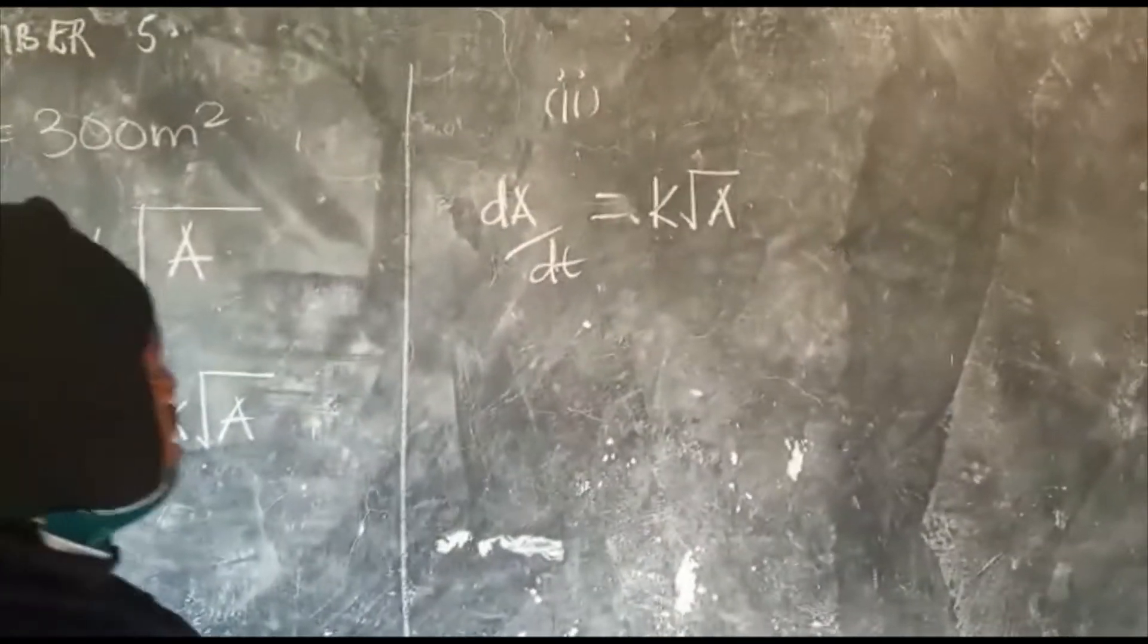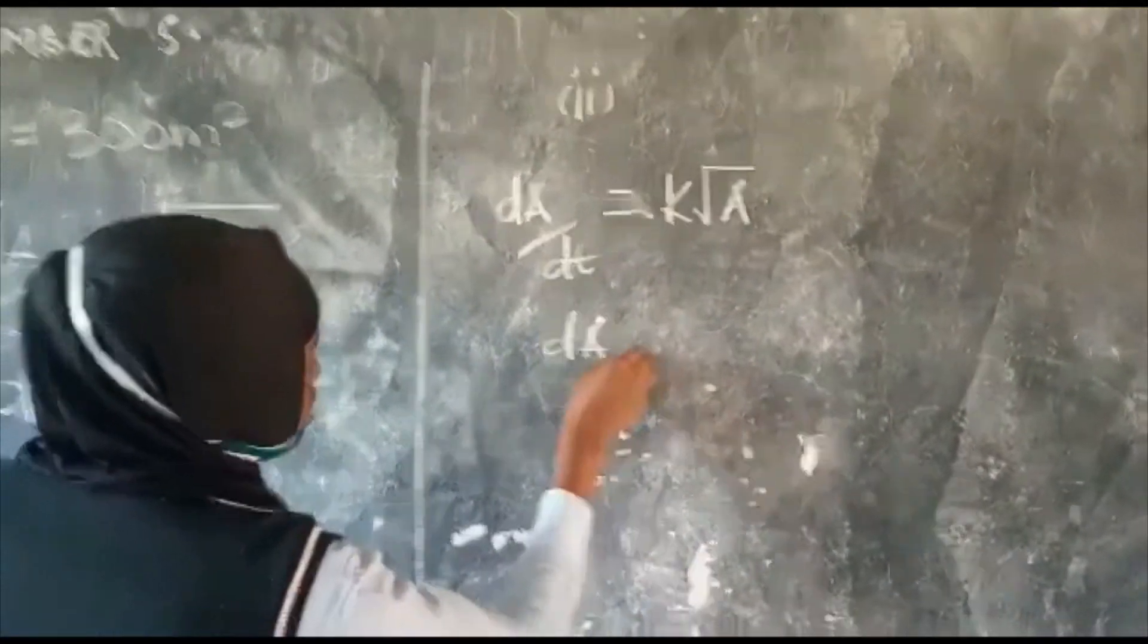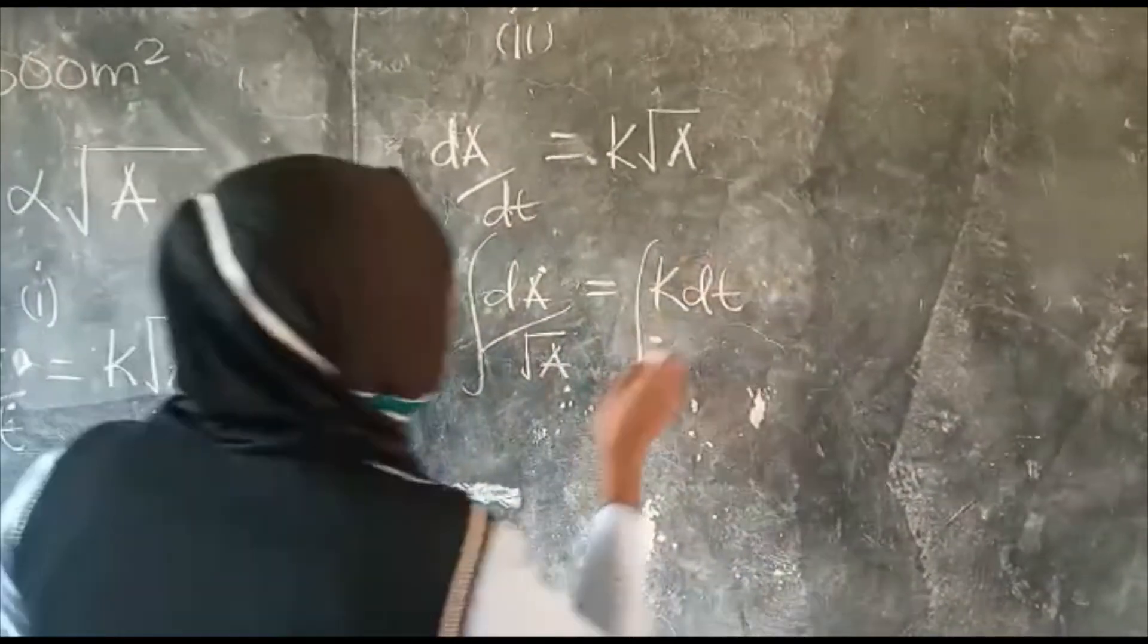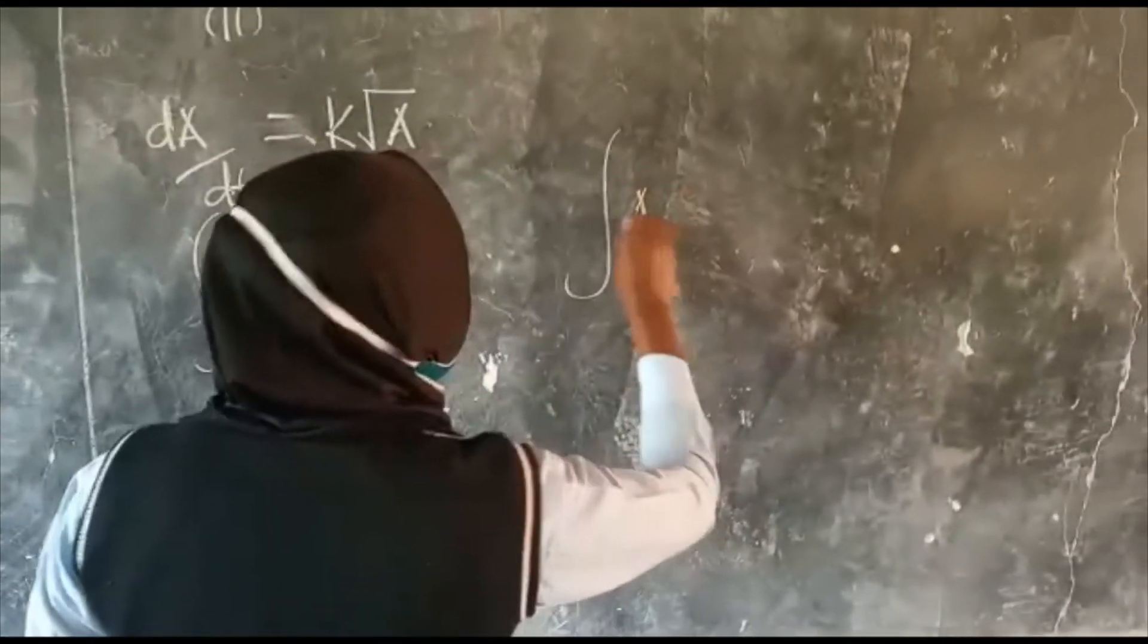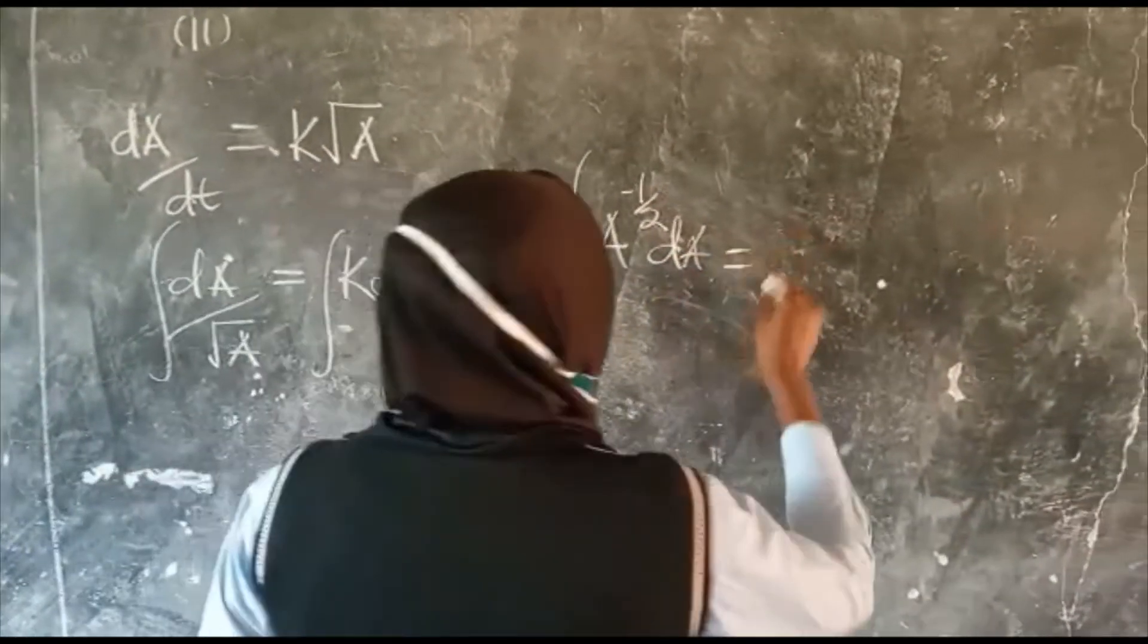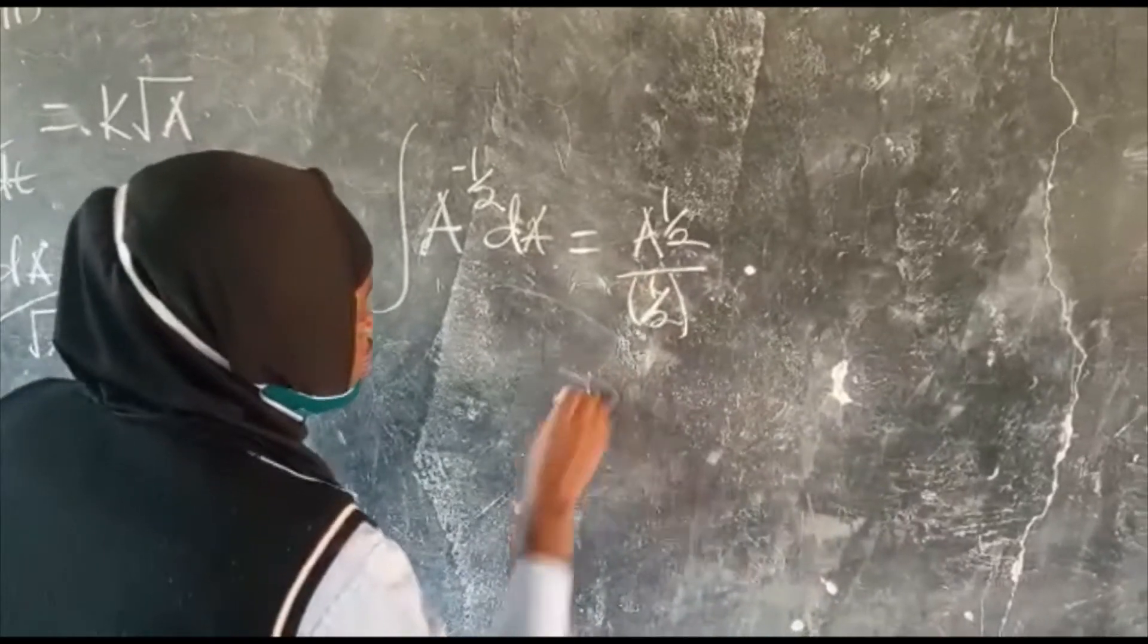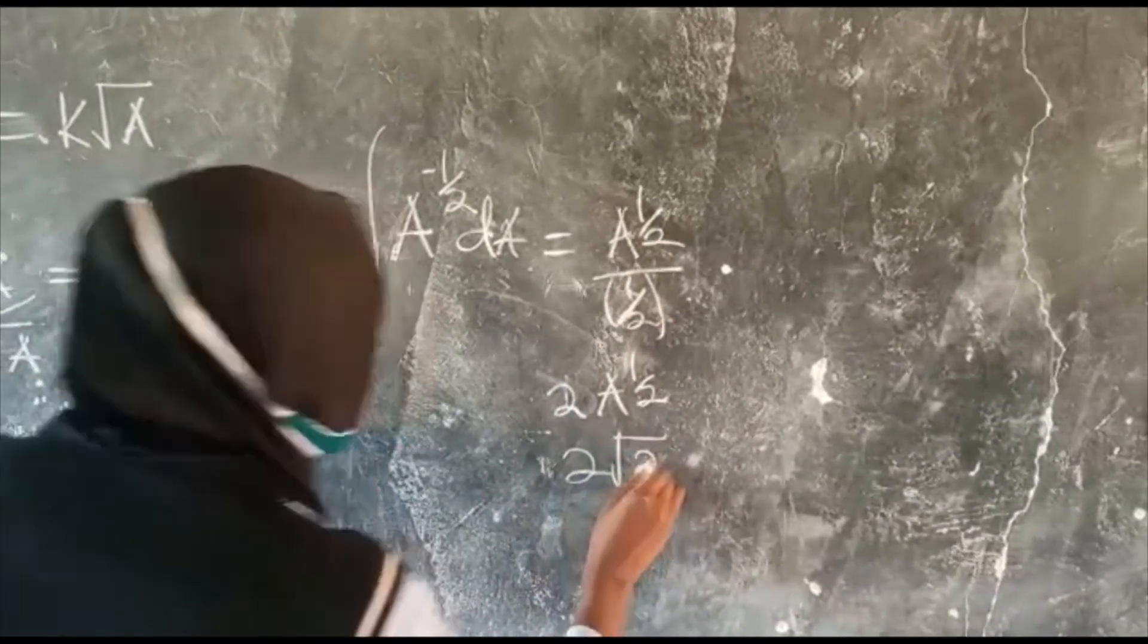But since this is a separable DE, I am going to separate the variables. So dA over root of A is equal to K dT. The integral of root A is the same as A power negative one half dA is equal to dT over half, which is the same as 2A power one half, 2 root A.